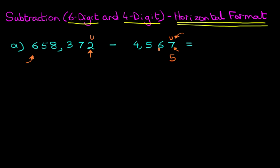Now we're going to do the tens. How many tens do we have? We don't have six because we've carried one over — we've actually got seven. How many tens do we need to get to? We need to get to seven. Therefore the answer is zero; we don't need to add anything there. That was nice and easy.